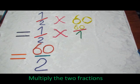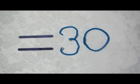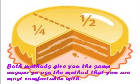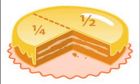We now have one half times 60 over 1. The next step is to multiply the two fractions. To multiply fractions, we multiply the numerator by the numerator and the denominator by the denominator. So 1 times 60 over 2 times 1, which equals 60 divided by 2, and 60 divided by 2 equals 30. As you can see, both methods give you the same answer. You should practice both methods and decide which works best for you.